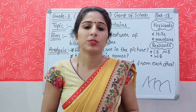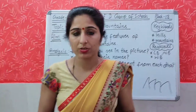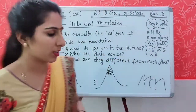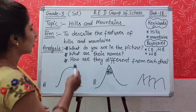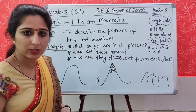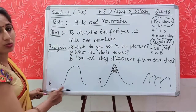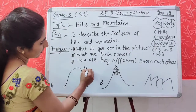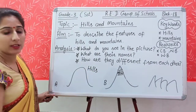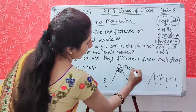Now I'm going to ask questions based on those pictures. My first question is: what do you see in the pictures? Picture A shows hills — these are the hills. And Picture B shows the mountains.